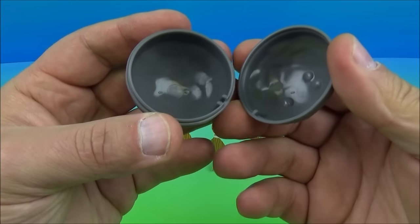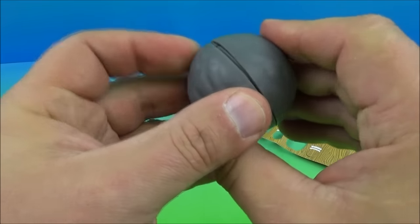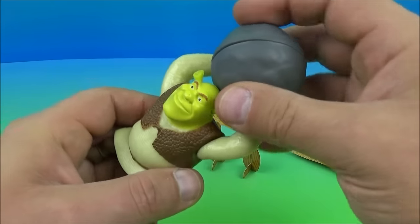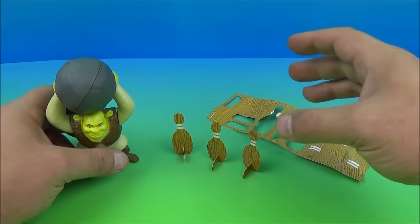What I find interesting here is this actually opens up, so I'm assuming you can probably store the accessories in there. What you do is you take the ball and you place it in Shrek's arms just like so.